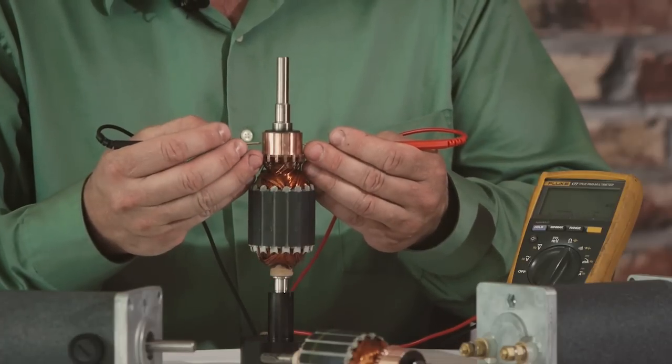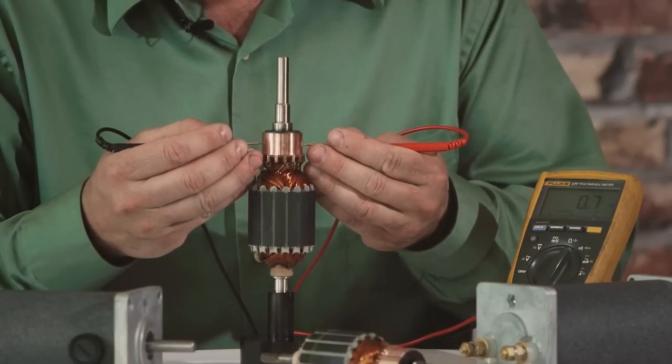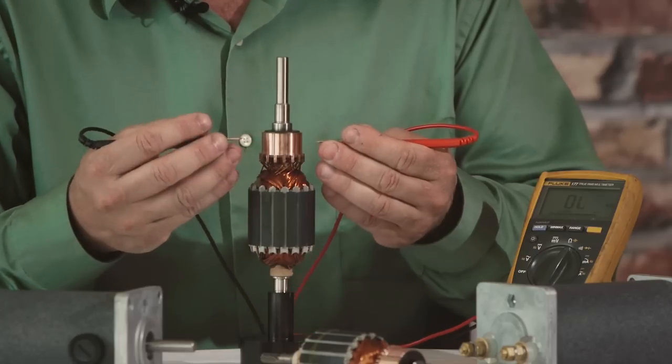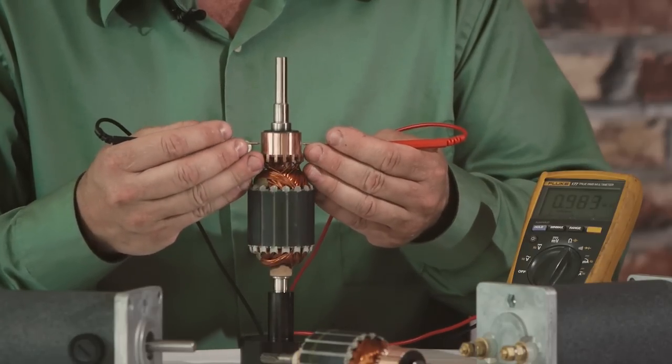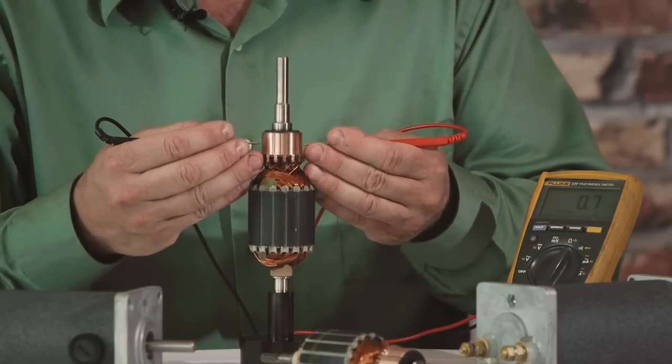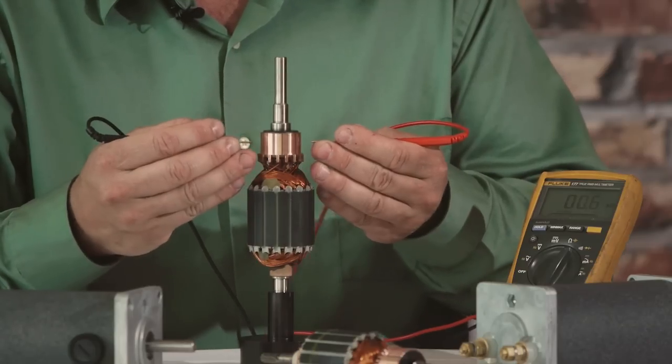On this particular measurement, we are reading about six tenths of an ohm. The actual value isn't important. What's important is that every time we perform this measurement, going all the way around, rotating our armature, that it stays consistent.